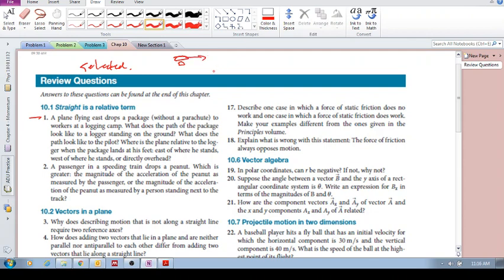And it doesn't say this, but we can assume that the velocity is constant. And here we have the logger standing on the ground. It drops a package. What is it going to look like?